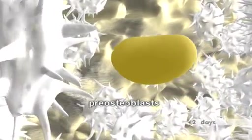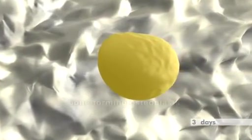By migration to the blood clot, pre-osteoblasts attach to the implant surface and gradually differentiate into bone-forming osteoblasts.